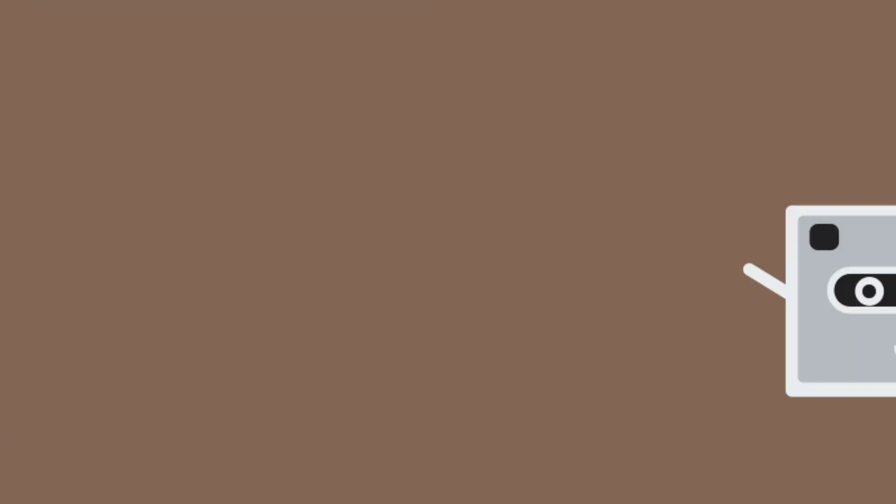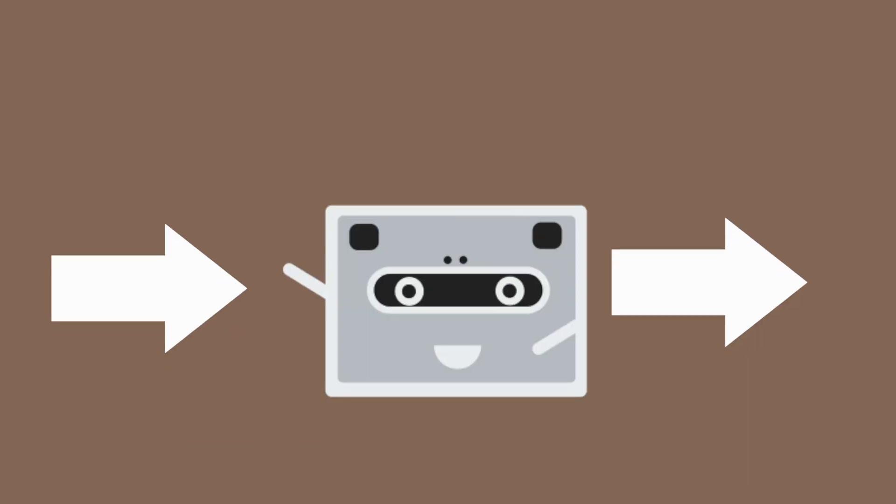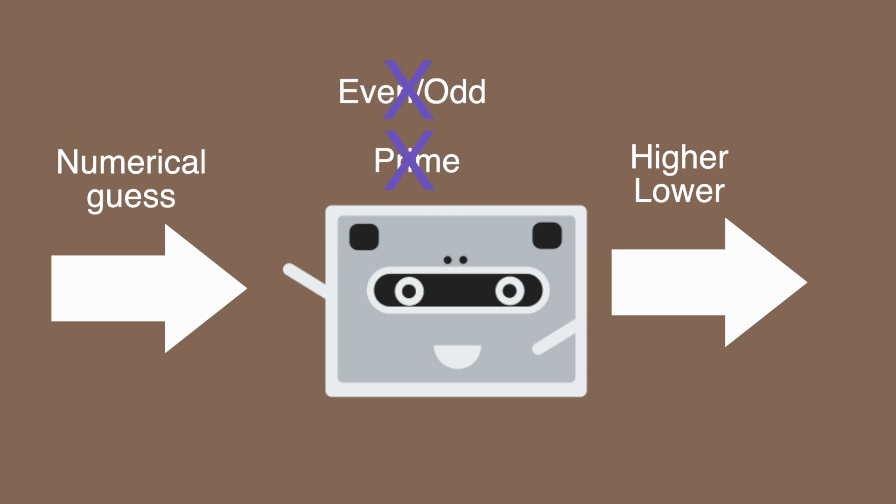In the last video, we saw that the only relevant components of a black box are the inputs and the outputs. The only information my friends needed to discover my number was a numerical guess and the higher or lower response I provided. Nothing about the properties of the number, i.e. the internal design of the black box, was necessary.